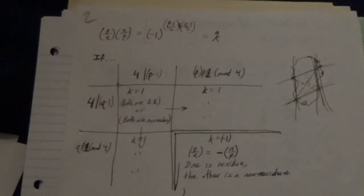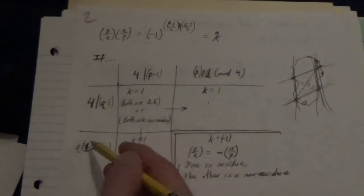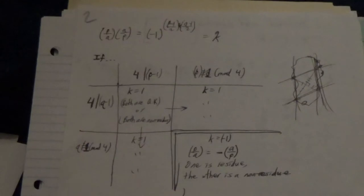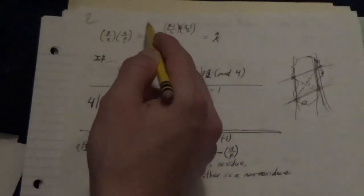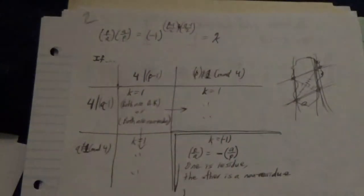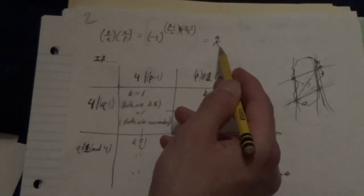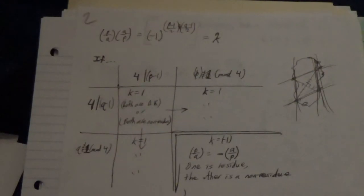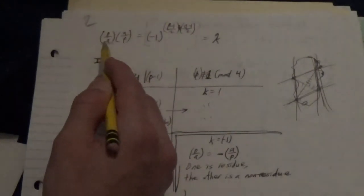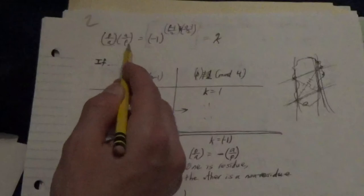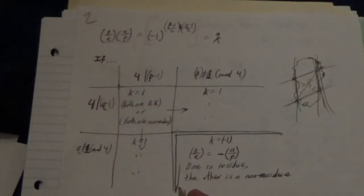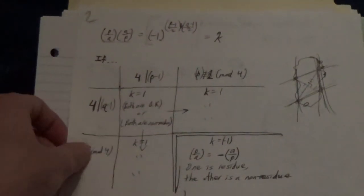what this really means by elimination is that p and q are both equal to 3 modulo 4. And that's a very specific case, a very special case. Because it's the case in which this side of the equation is negative 1 raised to an odd power, in which case we get k equals negative 1. And that means that one of these two quantities, p on q or q on p, is a residue and the other is a non-residue. And I'll show you some proof.